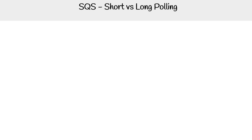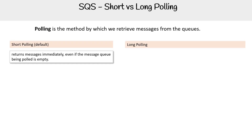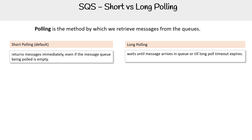Let's compare short versus long polling. Polling is the method by which we retrieve messages from the queue. Short polling is our default — this returns messages immediately even if the message queue being polled is empty. For long polling, this is where we wait until messages arrive in the queue or until the long poll timeout expires.